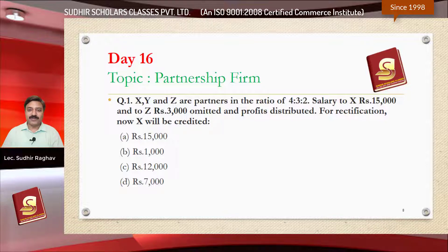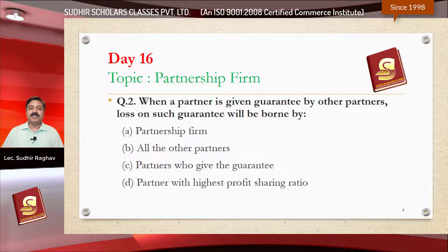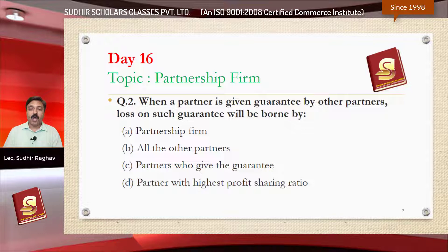Question number two: when a partner is given a guarantee by another partner, the loss of such guarantee will be borne by — option A the partnership firm, option B all the other partners, option C the partner who gave the guarantee, or option D the partner with the highest profit sharing ratio.